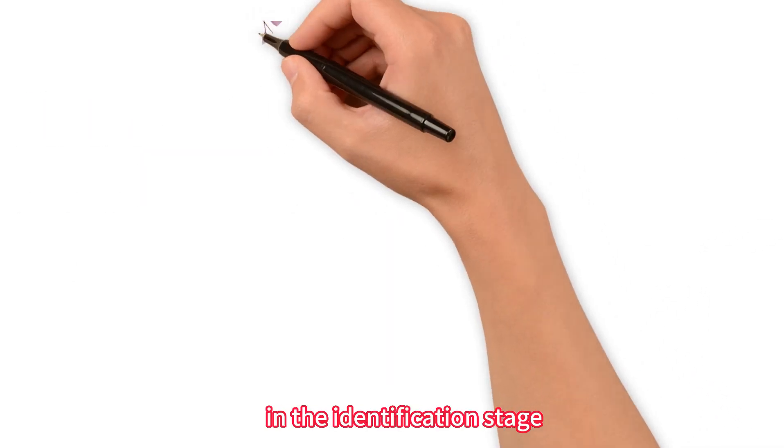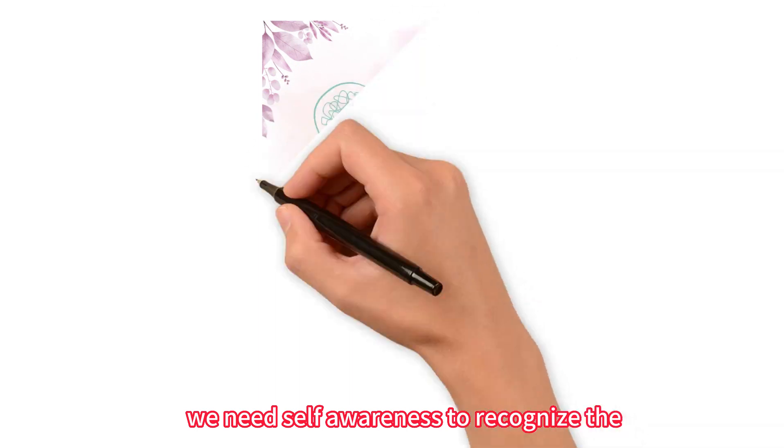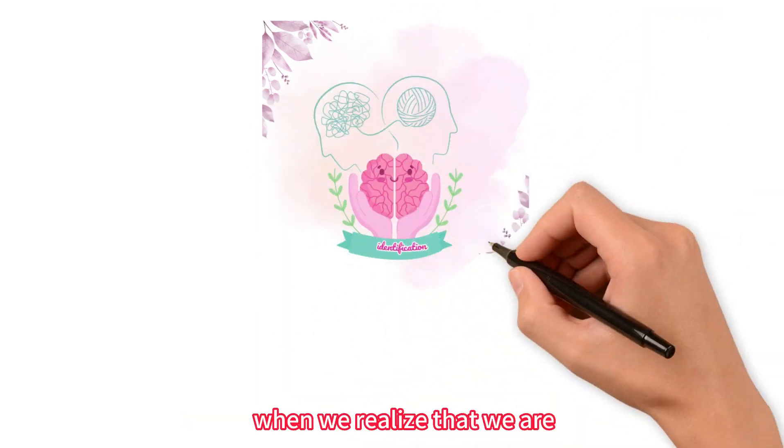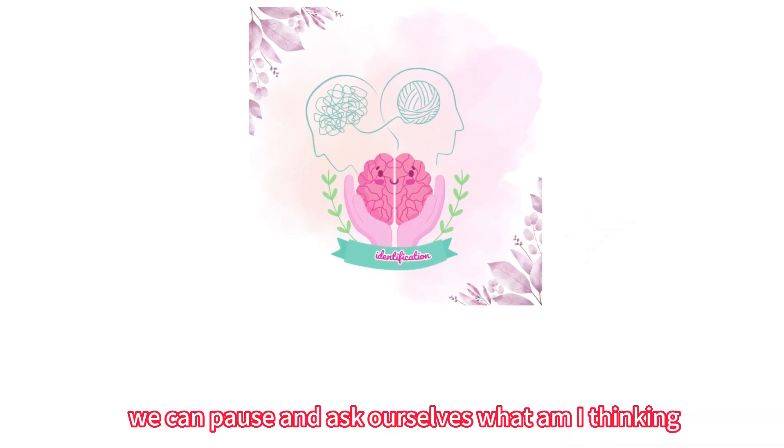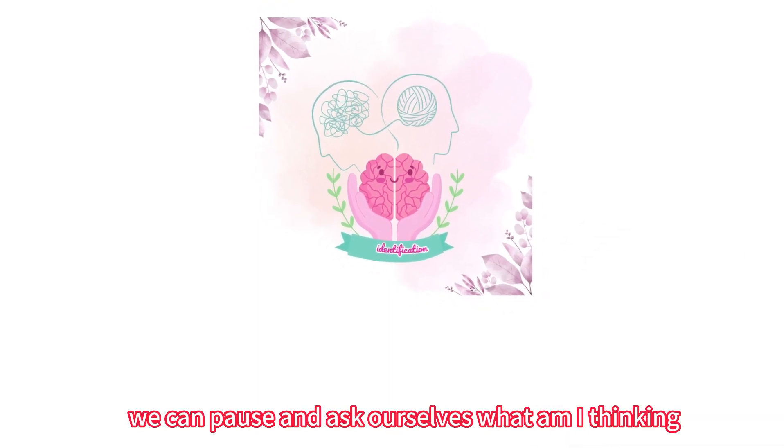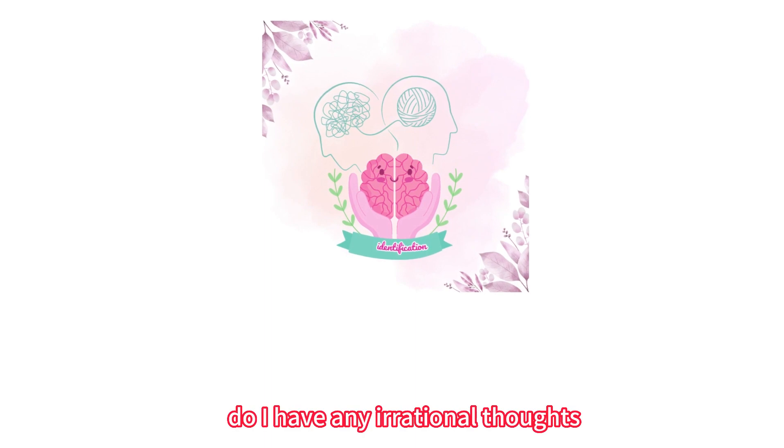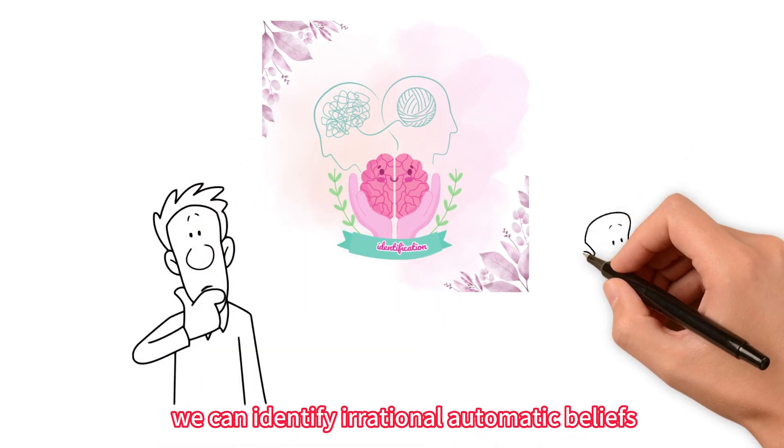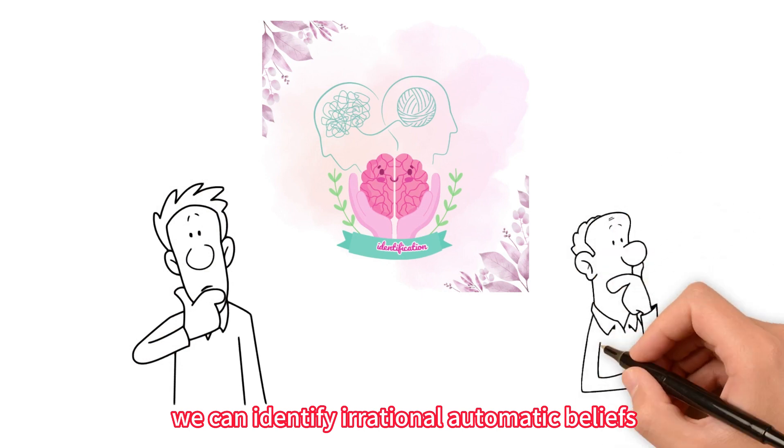In the identification stage, we need self-awareness to recognize the automatic thinking behind our emotions. When we realize that we are trapped in negative emotions, we can pause and ask ourselves, What am I thinking? Do I have any irrational thoughts? Through observation and reflection, we can identify irrational automatic beliefs.